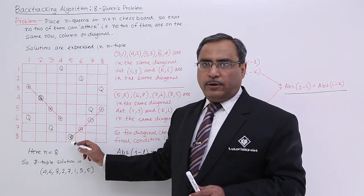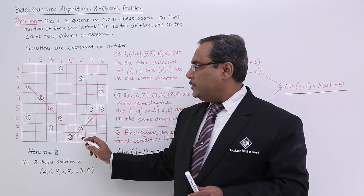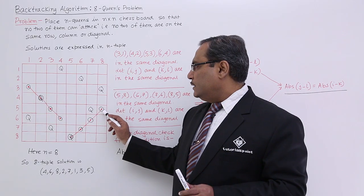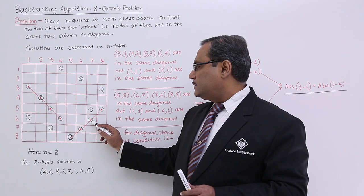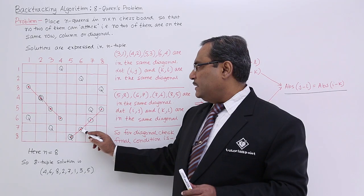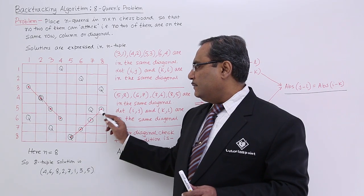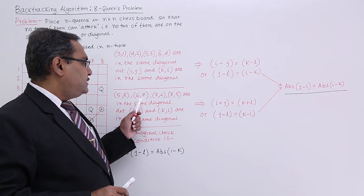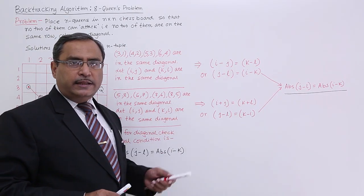Now consider this particular diagonal. Again, this I have taken this one arbitrarily. I could have taken this one also. Now, here you see. So 5 8 6 7, this is my 7 6 and this is my 8 5 they are in the same diagonal. So 5 8 6 7 7 6 and 8 5 they are in the same diagonal.